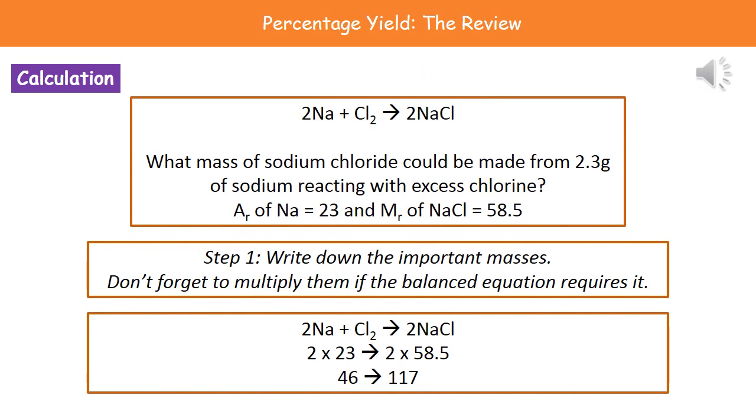So the first stage that we actually need to go through here is writing down the important masses. Now do make sure that if there are balanced parts of that equation, so if we've got our two sodiums, for example, we do remember that and multiply up the original masses. So remember we don't need to worry about chlorine at all, we just need to look at our sodium and the sodium chloride. Our mass of sodium is 23 as we see from the question, and because there are two molecules of it, our mass is going to be 2 times 23, which is 46. And then on the other side, we've got our sodium chloride which has a mass of 58.5. Again, we've got two molecules there, so 2 times 58.5 gives us our 117.